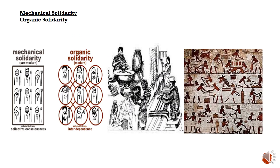Let's understand mechanical solidarity and organic solidarity with a little more contrast. Mechanical solidarity is characterized by traditional pre-industrial societies where social cohesion is based on shared values, norms, and beliefs. In such societies, the division of labor is minimal and individuals perform similar tasks. For example, in agricultural communities, everyone may engage in farming activities, leading to a sense of collective identity and solidarity based on common cultural practices and traditions.